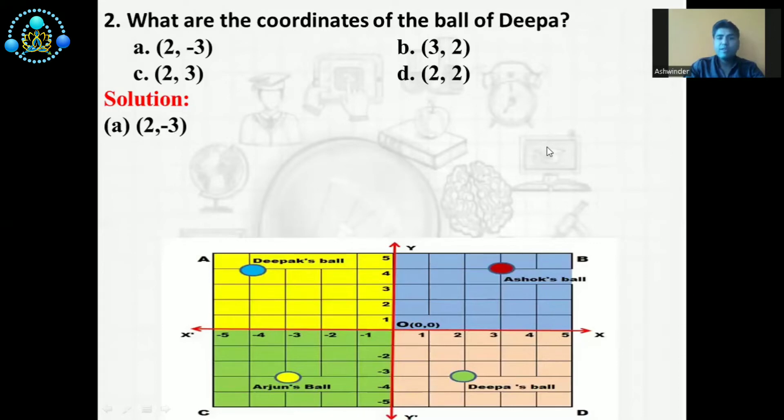What are the coordinates of the ball of Deepak? Again, we have four options. A: 2 and minus 3. B: 3 and 2. C: 2 and 3. D: 2 and 2. So the correct option is A, 2 and minus 3.